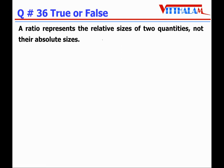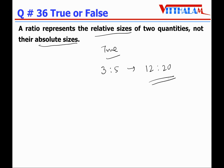Question 36: A ratio represents the relative sizes of two quantities, not their absolute size — it's True. Suppose a ratio is 3:5, that is a relative size between a and b. It may be 12:20, and that is also the ratio. So it is a relative size, therefore it's True.